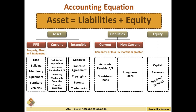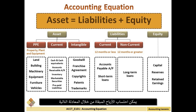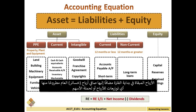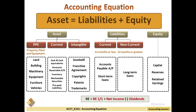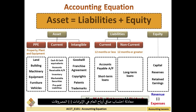The retained earnings formula is: Retained Earnings at the beginning of the period, plus Net Income, minus any cash or stock dividends. The net income formula is Revenue minus Expenses.